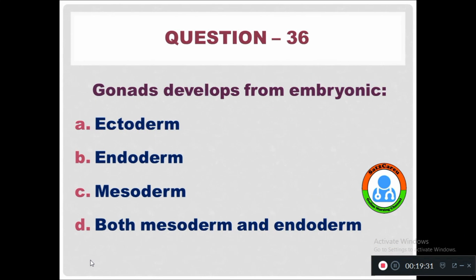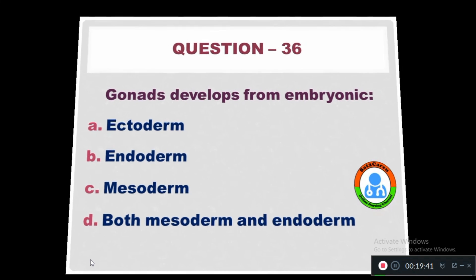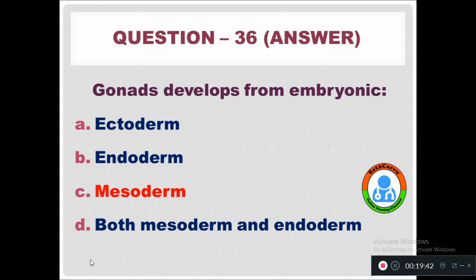Question 36: Gonads develop from embryonic — Option A: Ectoderm. Option B: Endoderm. Option C: Mesoderm. Option D: Both mesoderm and endoderm. The right answer is mesoderm.